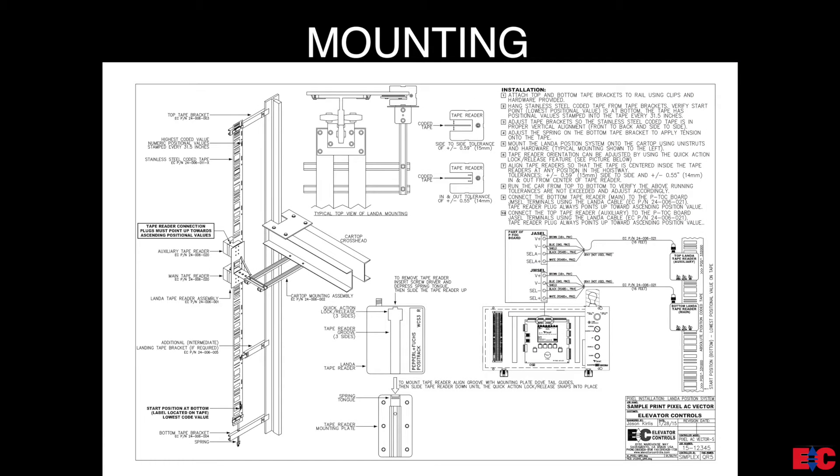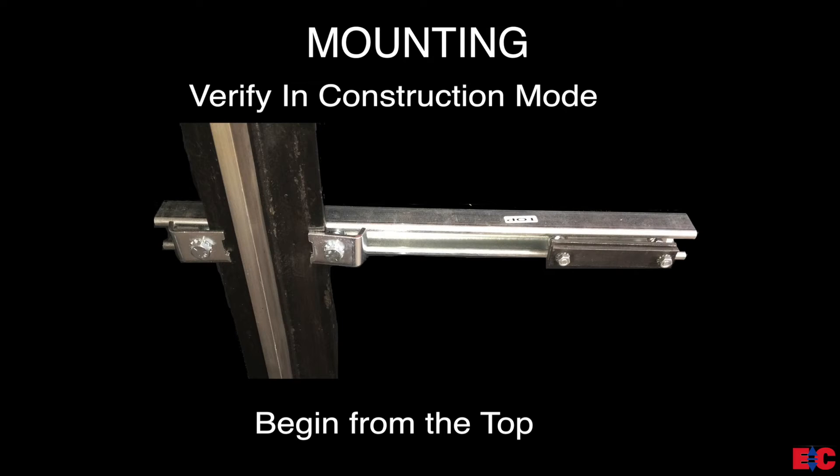Once you have all your boxes with the mounting hardware, go over to page QR5 of the Pixel Controller prints and review the step-by-step mounting instructions located in the top right corner. When installing Lambda, we want to start by verifying that the Pixel Controller system is on construction mode. Then attach the top bracket using the provided rail clips. When mounting the Lambda tape, begin from the top of the hoist way and work your way down.